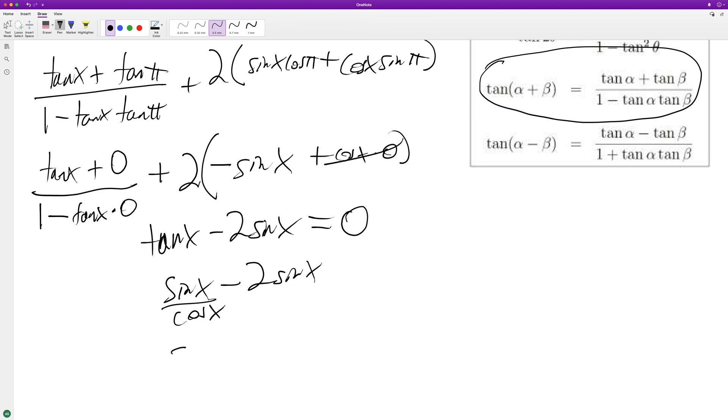And we'll do sine of x minus 2 sine of x cosine of x over cosine of x equals 0.